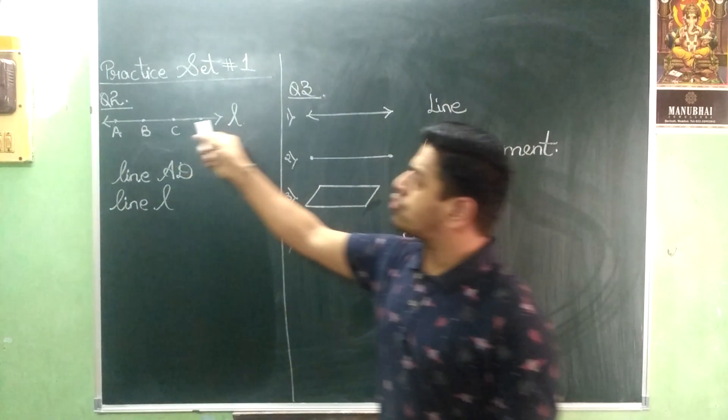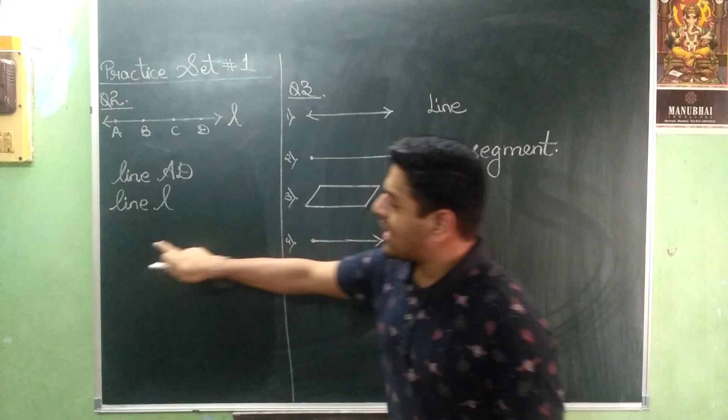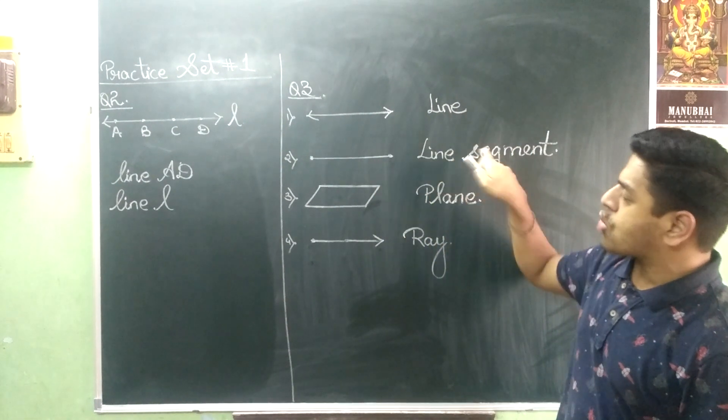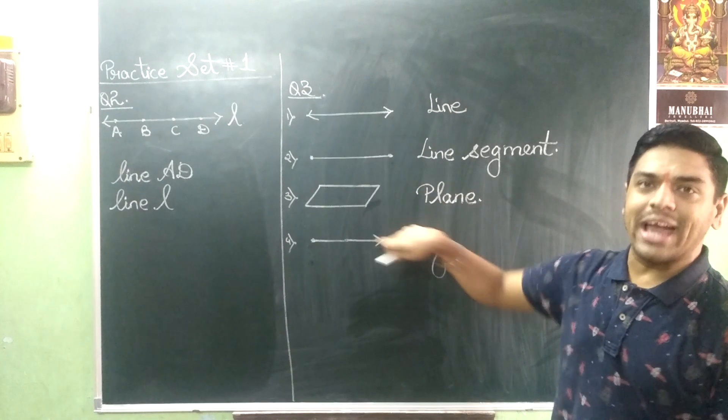First write Q2, draw the line and name it. Then leave one line. Copy this figure, name it. Again leave a line. Copy, leave a line, copy and again.